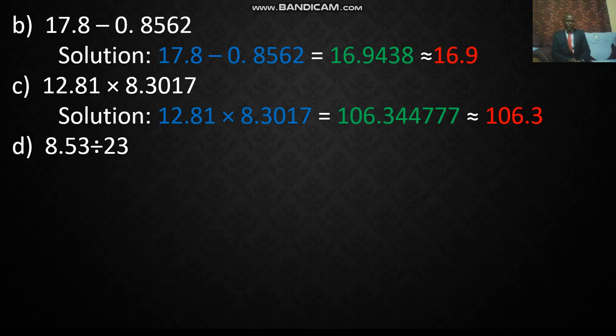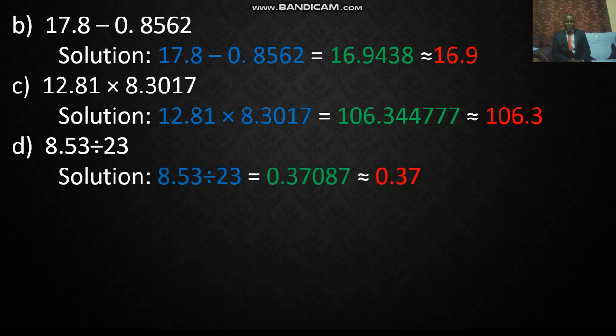Then we have division. In this case it will be 0.37087. So the one that has two significant figures is 23. So the answer will be estimated to two significant figures, which is 0.37.